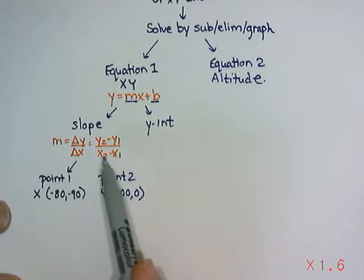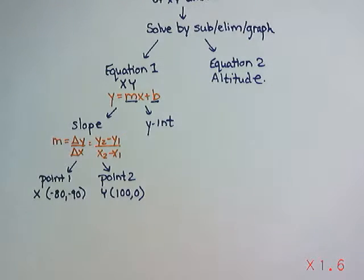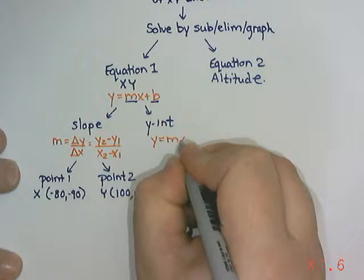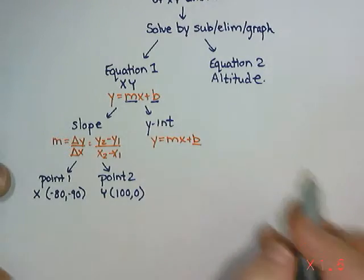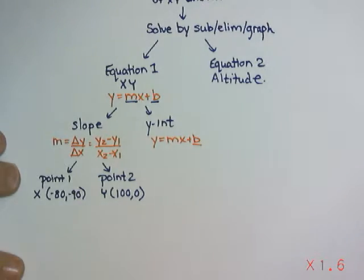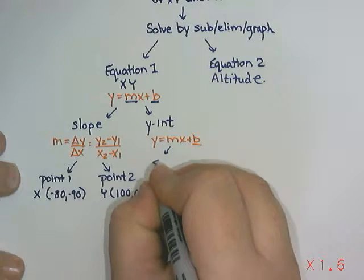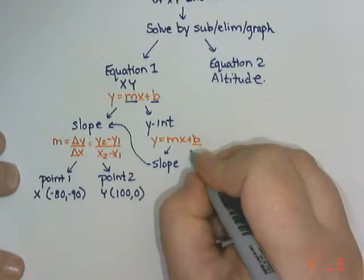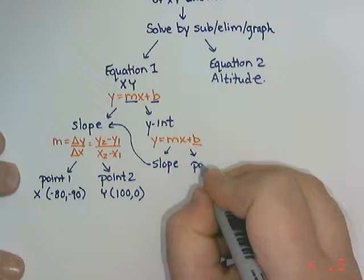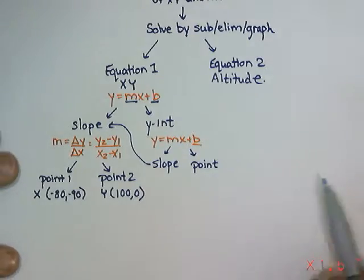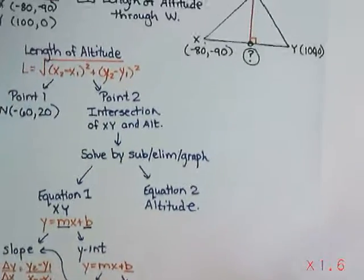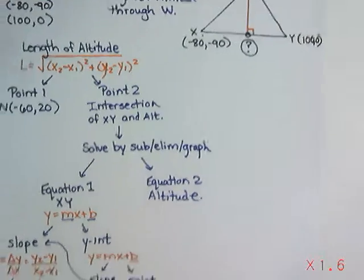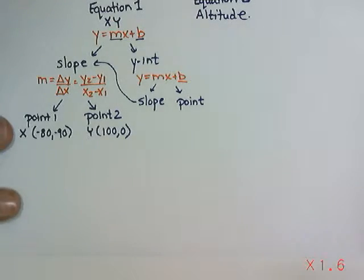So once we calculate our slope, we have to also find the y-intercept. The y-intercept, we use y = mx + b and we solve for b. So to solve for b, I would have to know m, which is my slope, which we would already have calculated over here. And then we also need an x and a y, which would be a point. And it has to be a point on the line. So since this is XY, we either need to use point X or point Y, whichever one you think is easier. I think the point Y looks a little bit easier. But you could use either one.